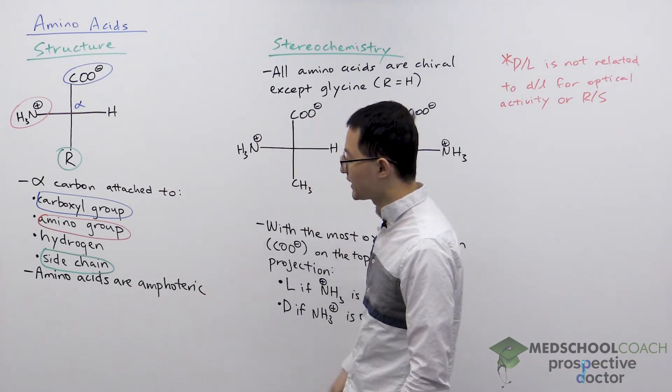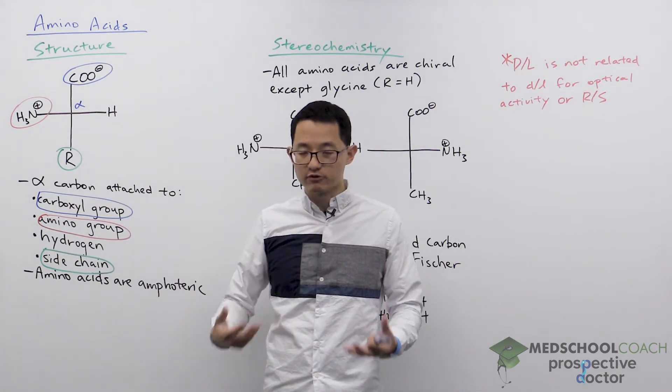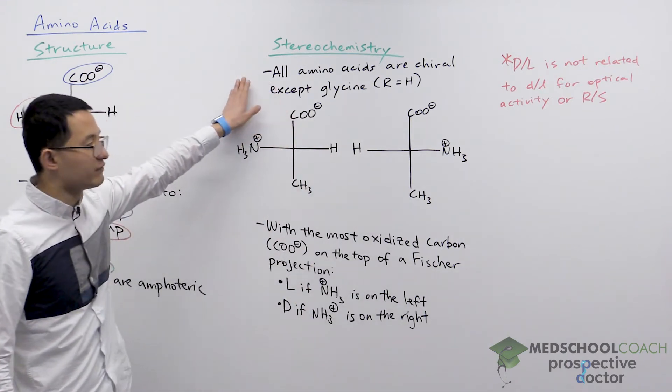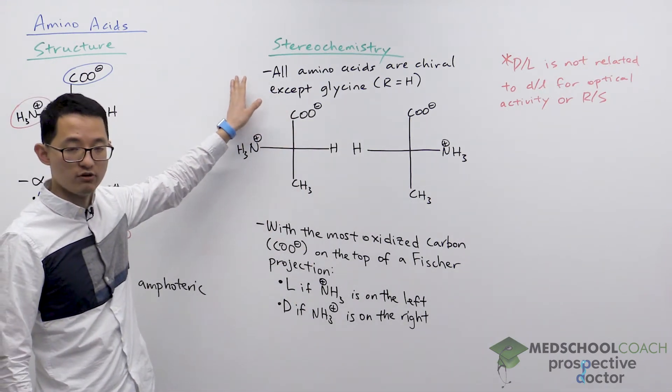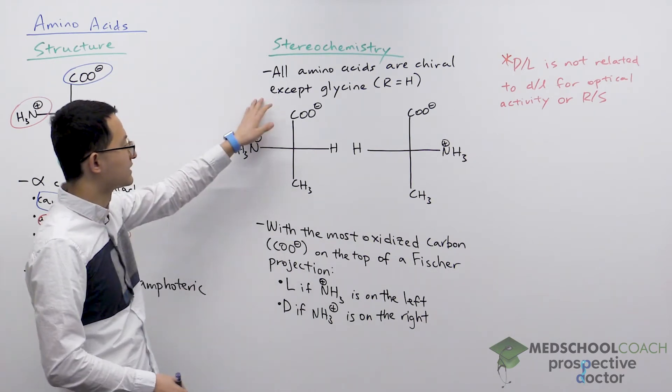The fact that amino acids are bound to four groups should make you start to think about chiral centers. And that's a good idea because almost all the amino acids are chiral. There's actually only one amino acid that's achiral and that's glycine.